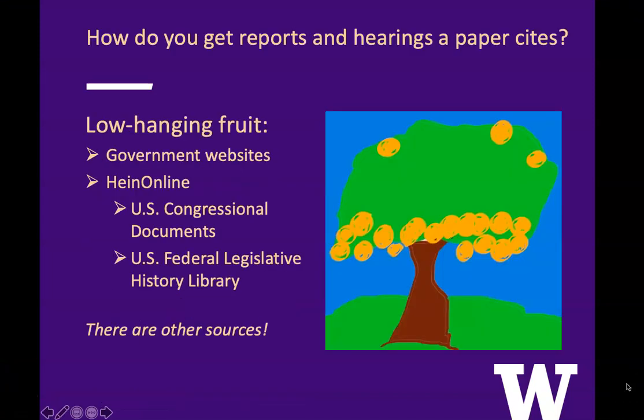In this lesson, I would like to show you how you can get the low-hanging fruit — that is, reports and hearings that are posted on government websites and are easily found in HeinOnline in either the Congressional Documents Collection or the Federal Legislative History Library. There are lots of other sources, other databases, other techniques, but we're focusing on the low-hanging fruit.